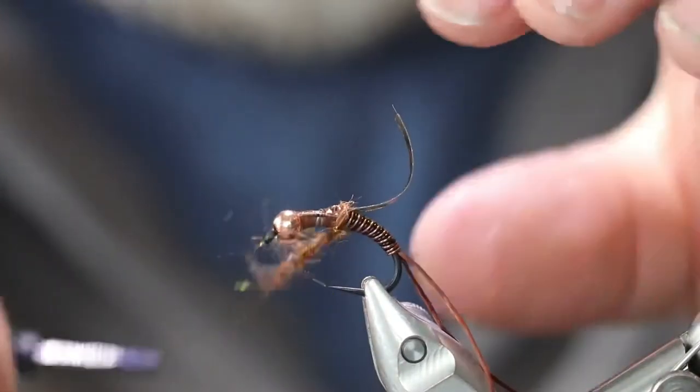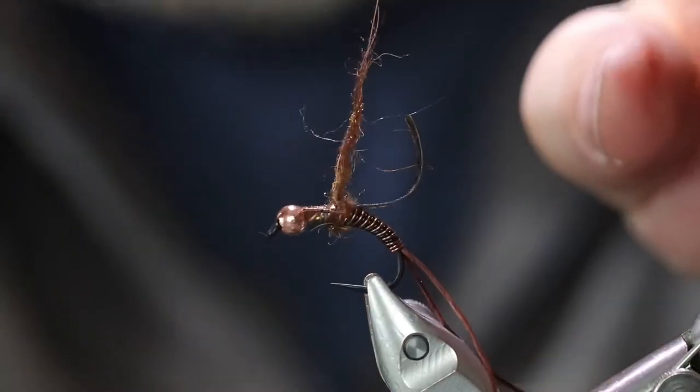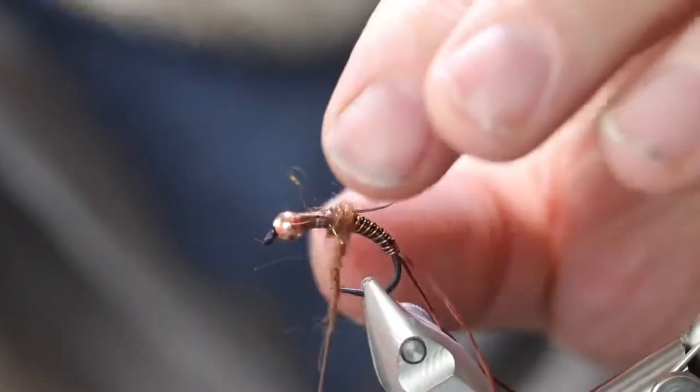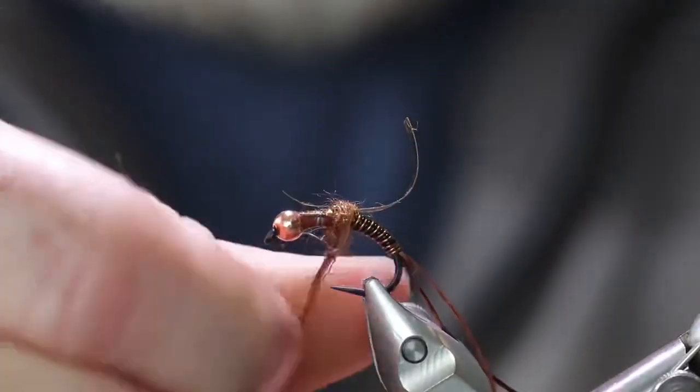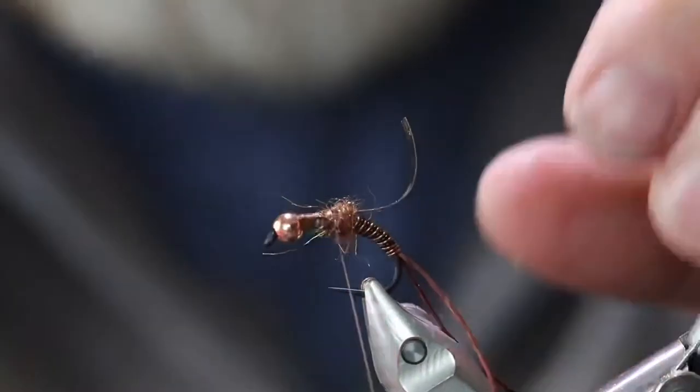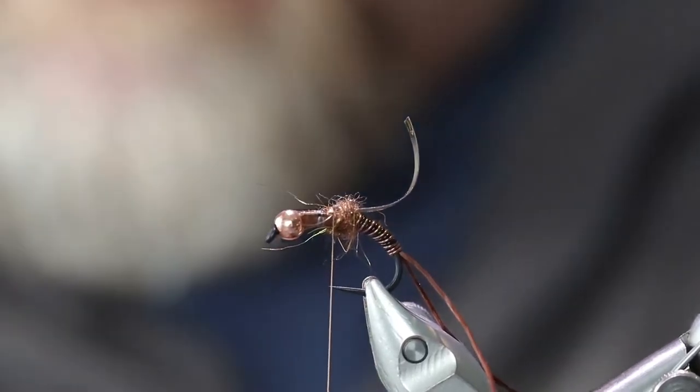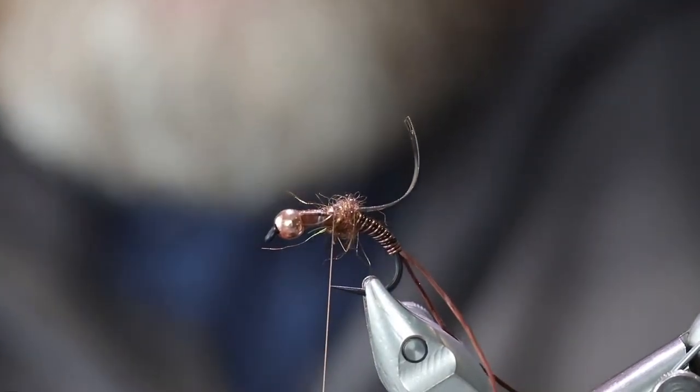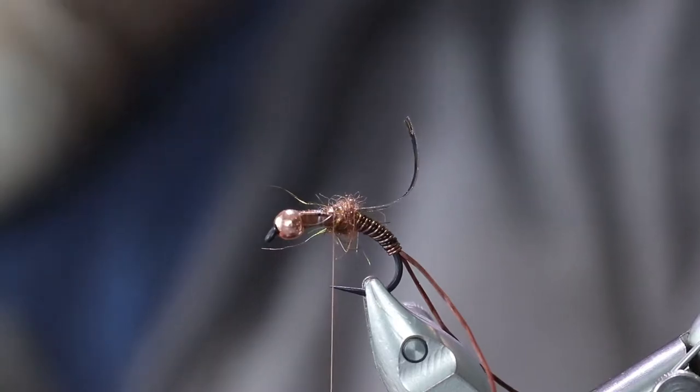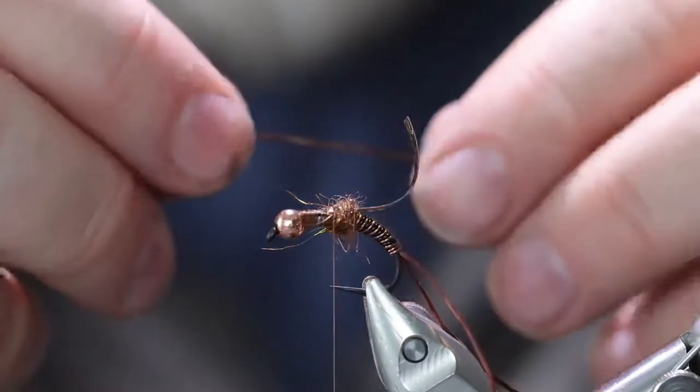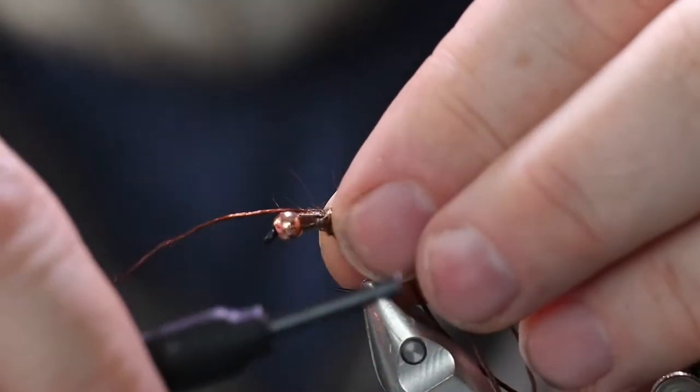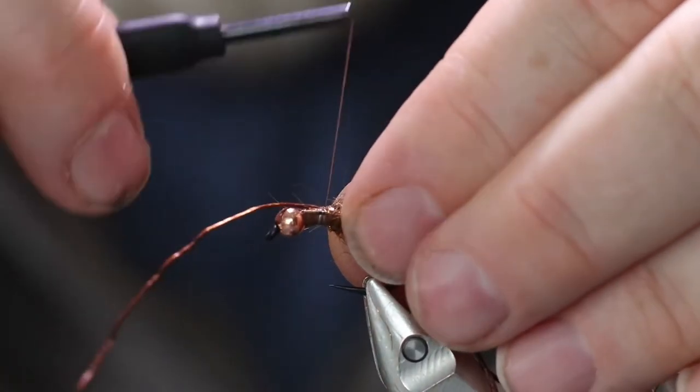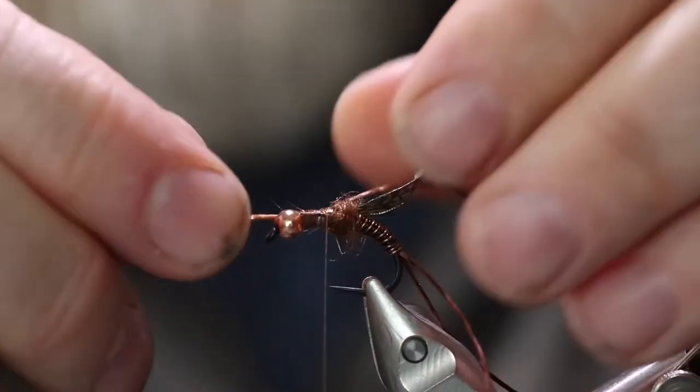I like to keep my dubbing twisting as I'm putting it on so that it doesn't get a big loose pile on it. Now let's tie in another set of legs. This is going to be more of an X style than the regular, than a regular stonefly would be. It'll be more like an old Madame X style.